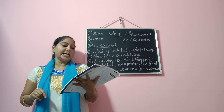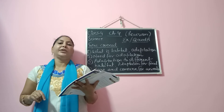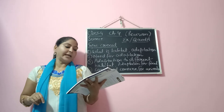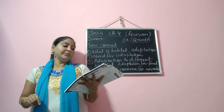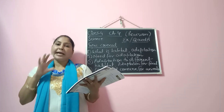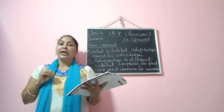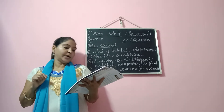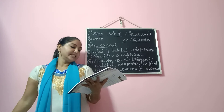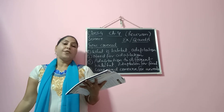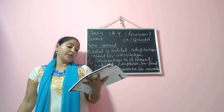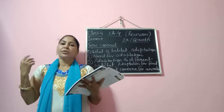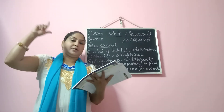Question 5: Vultures feed on dead animals and clean up the environment — what do they feed on? They feed on dead animals. Question 6: Ducks have a type of feet which acts as paddles and helps them to move forward while swimming — what kind of feet do they have? They have webbed feet. Question 7: This helps the elephant to reach for leaves from tall trees — which part of the elephant helps them? It is their trunk.